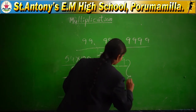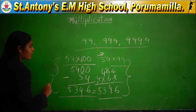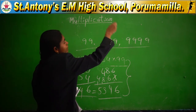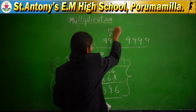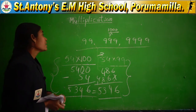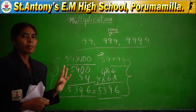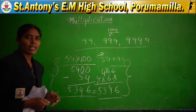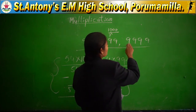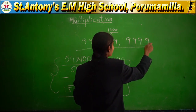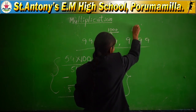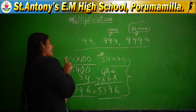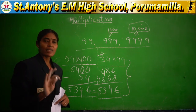The direct method is more difficult; the short method is the easiest. If you want to multiply with 999, multiply with 1000 and subtract the multiplicand. If you want to multiply with 9999, multiply with 10,000 and subtract the multiplicand from the product. You will get the correct answer. Is it clear?